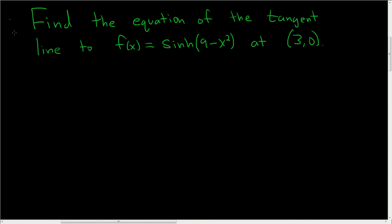Find the equation of the tangent line to this function at the point 3, 0. Let's go ahead and work it out. To find a line, we need a point and a slope. We've already got the point, we just have to find the slope.